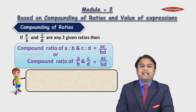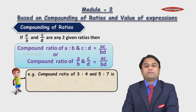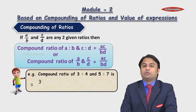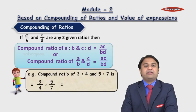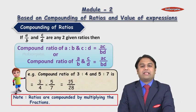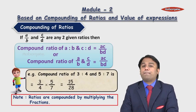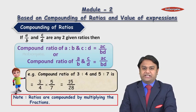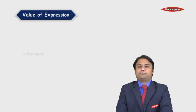Let us understand this with an example. The compound ratio of 3 is to 4 and 5 is to 7 is equal to 3/4 into 5/7, which is equal to 15 upon 28. It is important to note that ratios are compounded by multiplying the fractions.